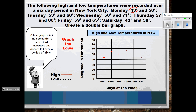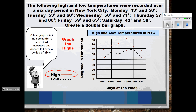Now it's a line graph, so I draw a line connecting the dots. I connect the low temperature points with a dashed black line. For the high temperatures, I plot each point: Monday 58 degrees, Tuesday 68, Wednesday 71, Thursday 80, Friday 59, and Saturday 43 degrees. I connect those with a solid red line to represent the high temperatures.